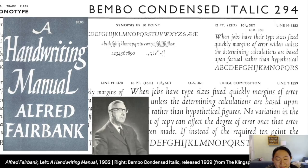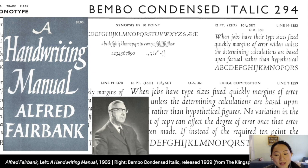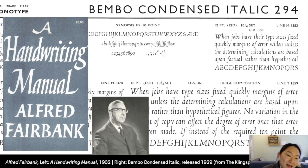Alfred Fairbank is another notable British calligrapher who was very instrumental in the italic revival. His book, A Handwriting Manual, was very influential in the way handwriting was being taught in British schools. He had one typeface that was made, modeled on Arrighi's handwriting. Although he meant it as an independent drawing, it was given to Monotype and branded as Bembo Condensed Italic, released with Bembo — which Alfred Fairbank understandably had a lot of problems with.